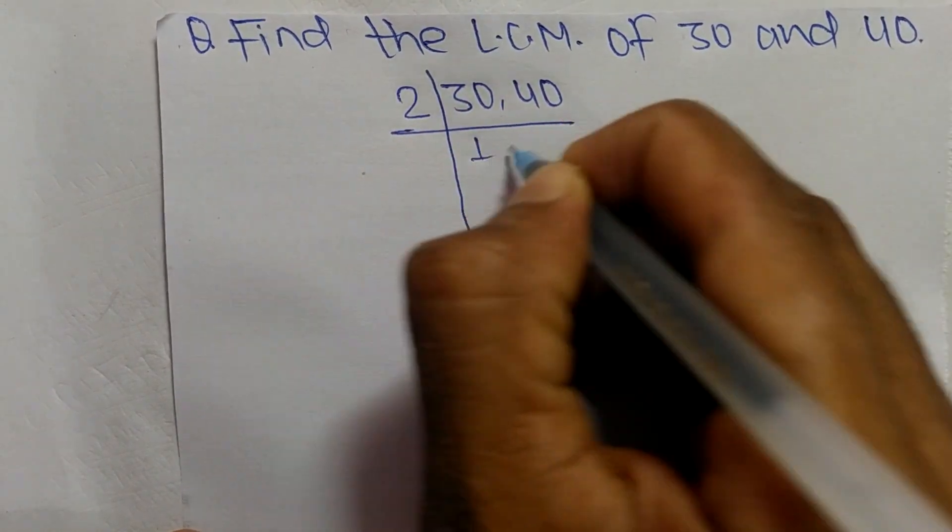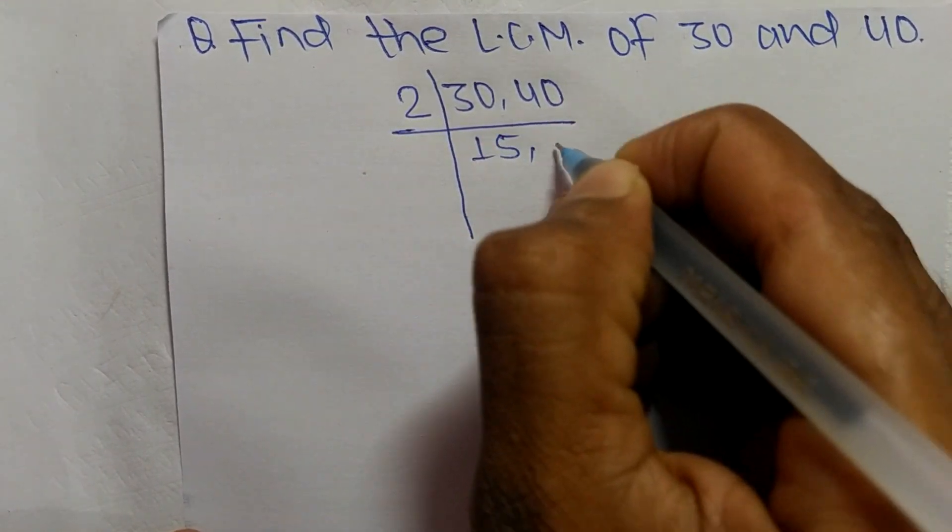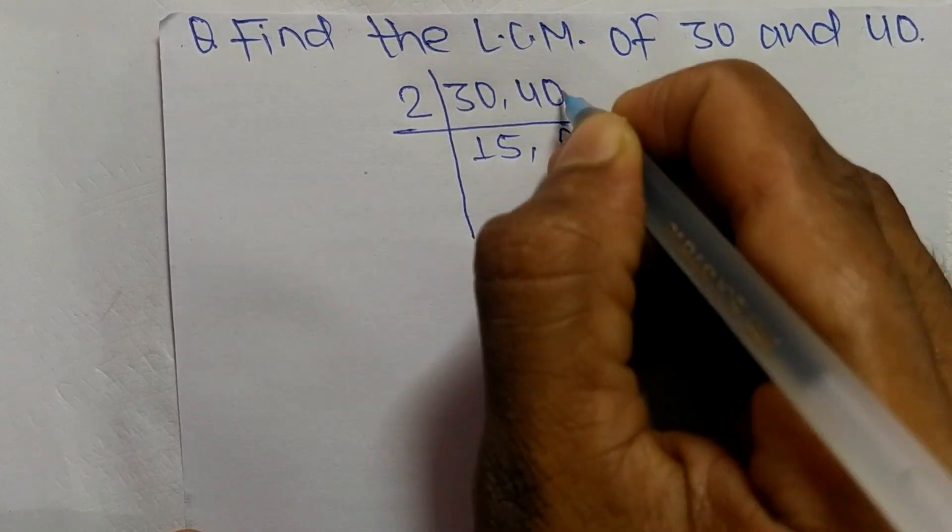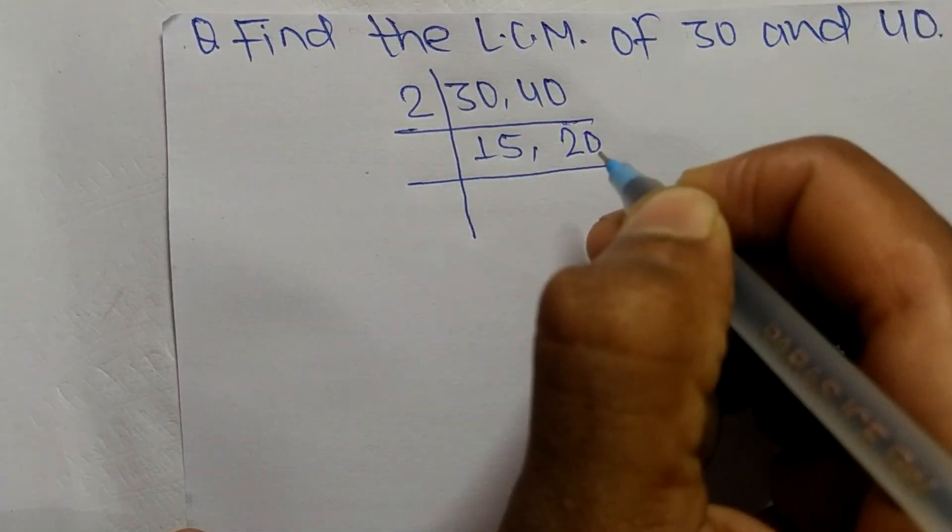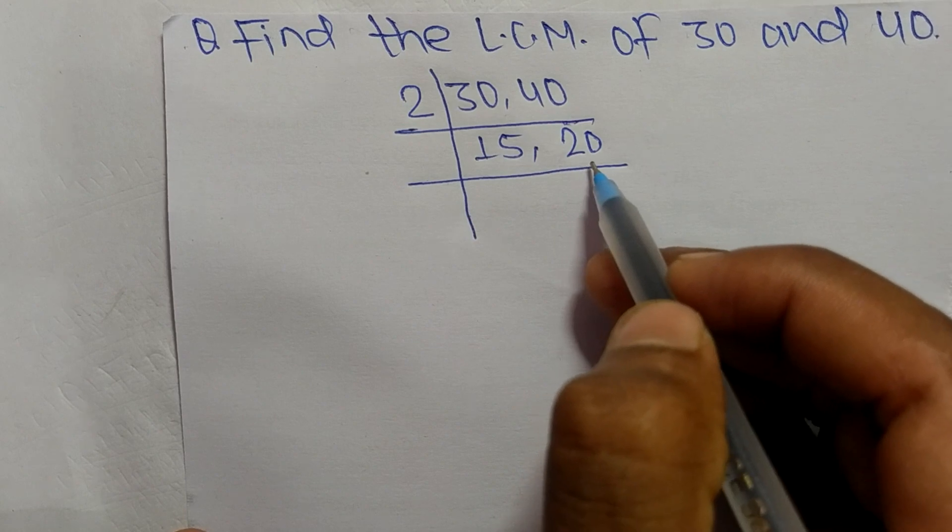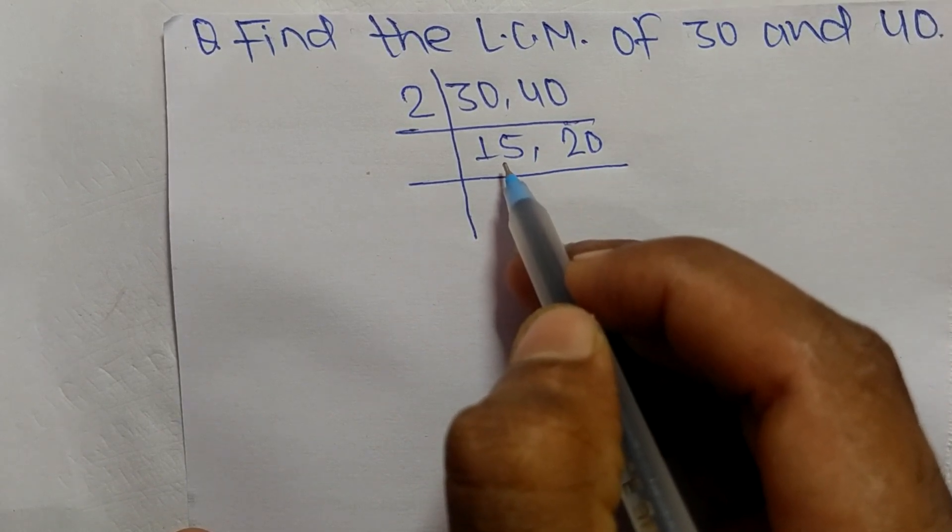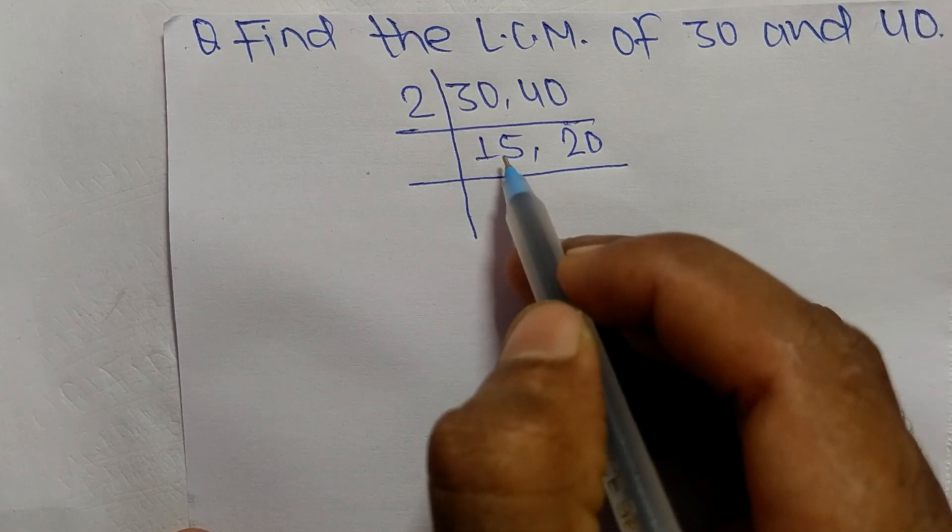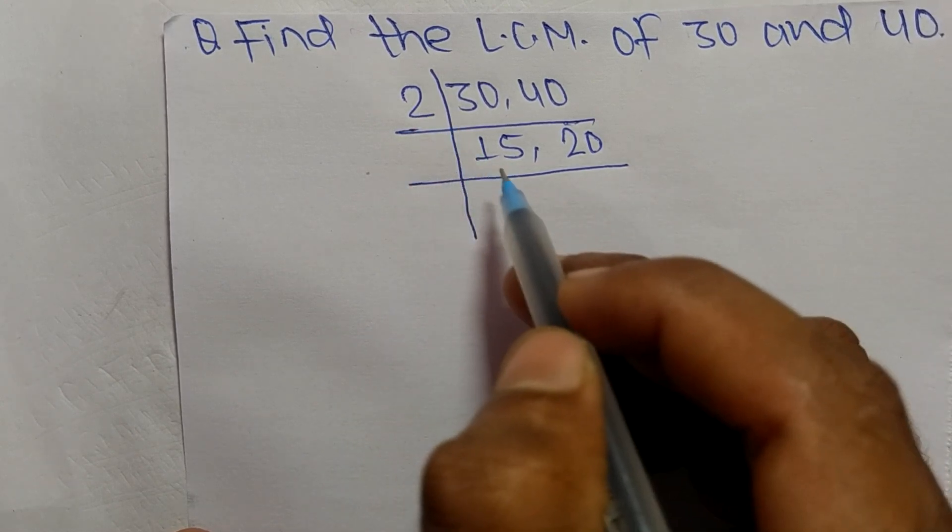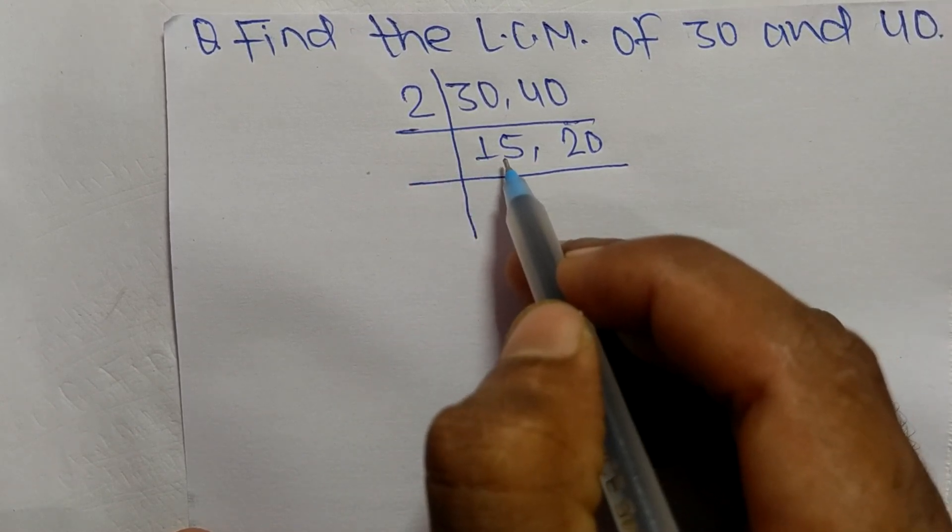So 2 times 15 means 30, 2 times 20 means it is 40. So now 2 can exactly divide 20 but can't exactly divide 15. So we choose here the number greater than 2 that can exactly divide 15 and 20 both.